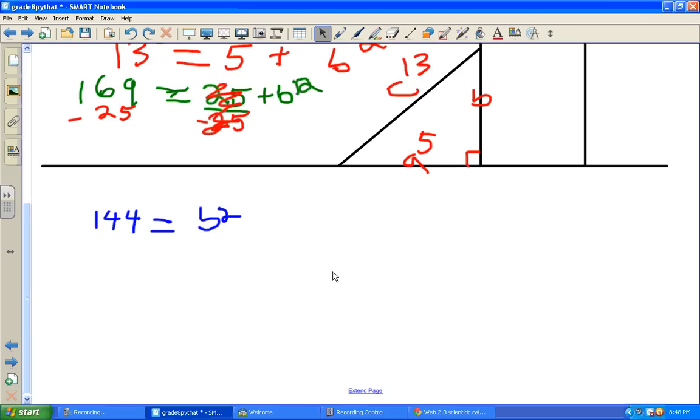But we only want B by itself. So the way to get rid of a squared is to take the square root. But if we do it to this side, we must do it to this side as well. So now we're left with B on this side, and we've got to find out what root 144 is.